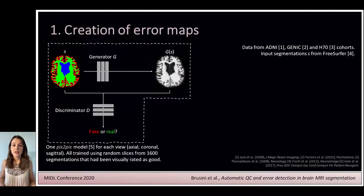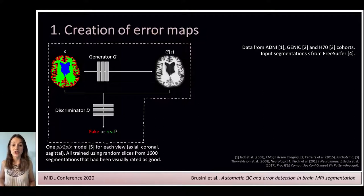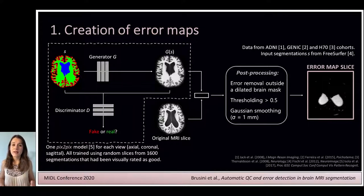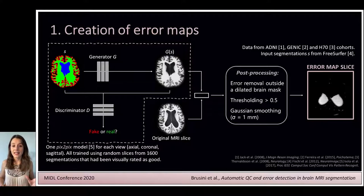The creation of the segmentation error maps is based on the use of conditional generative adversarial networks and, in particular, the pix2pix architecture. The network receives a brain segmentation mask as input and is trained to generate an output MRI slice that has to match the input segmentation. The generated MRI can then be compared with the original MRI image by computing the difference between the two. This difference image highlights regions where the generated and original MRI do not match and, therefore, where segmentation errors could be present. This step is repeated for all slices and all three image views in order to finally aggregate these 2D difference images into one final 3D error map.